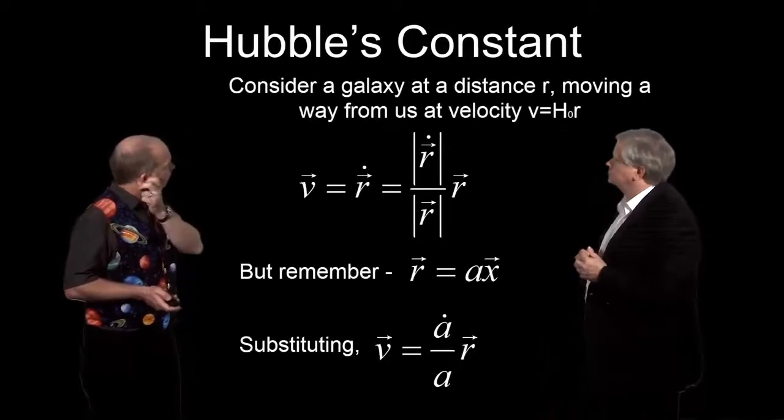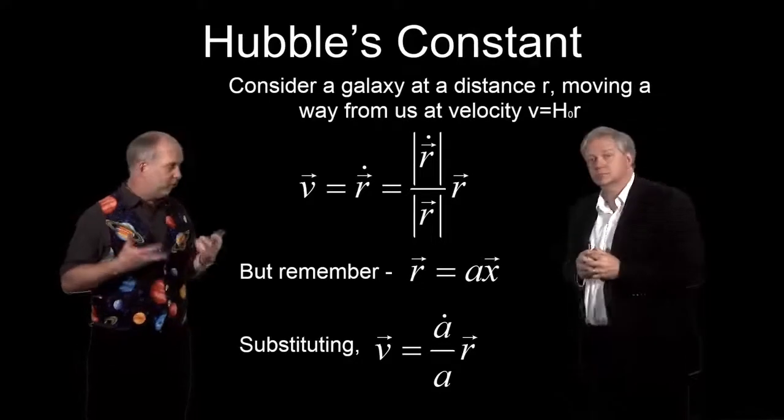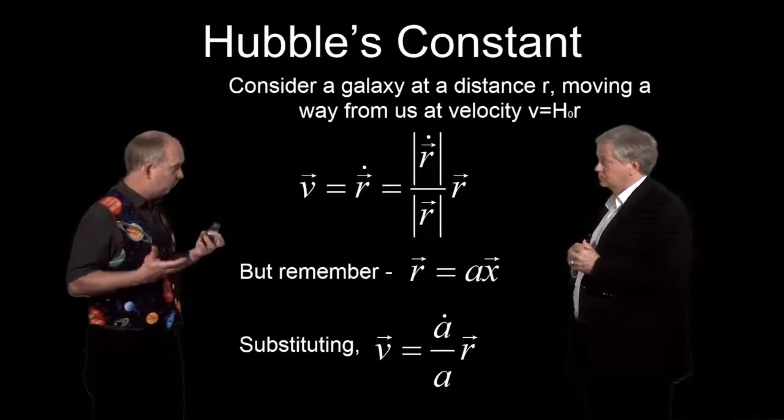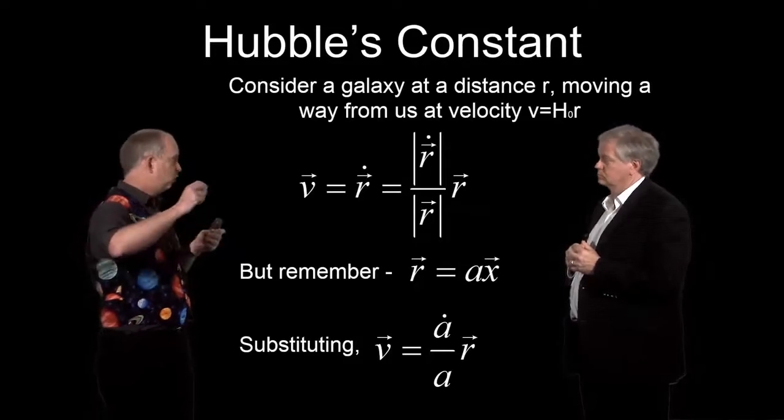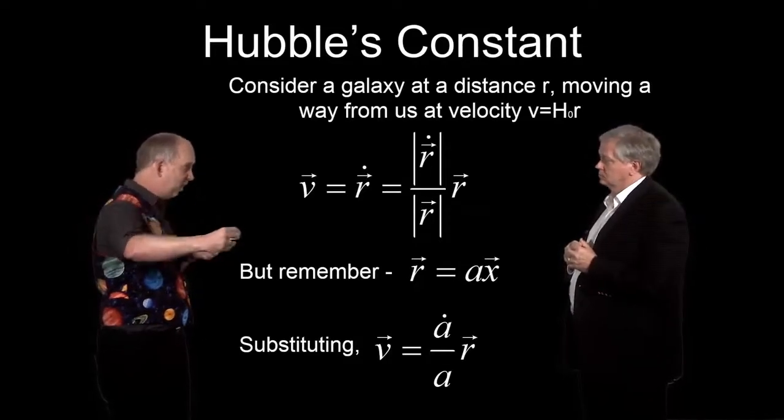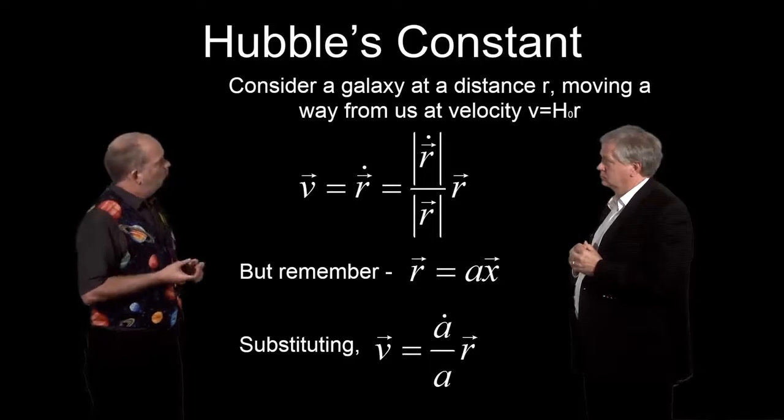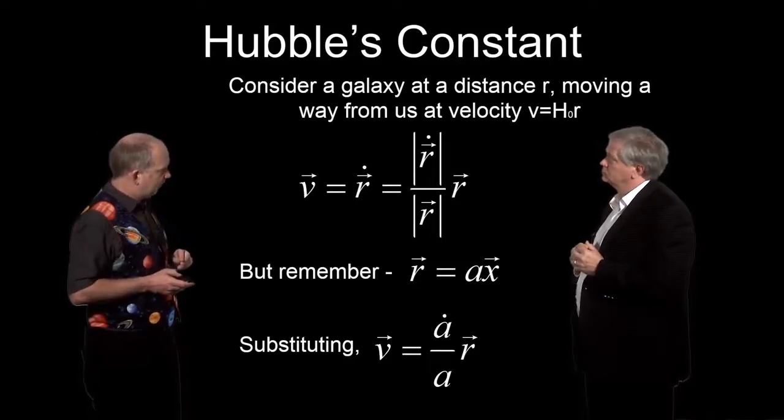So what we know is right now the universe is expanding, and the evidence of that, if you remember, was the Hubble law. We had a graph of all sorts of different galaxies showing how far away they are and how fast they're moving. So what does this Friedmann equation tell us about that?